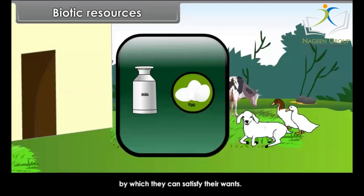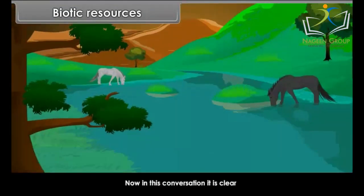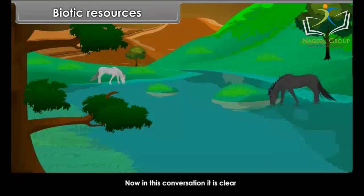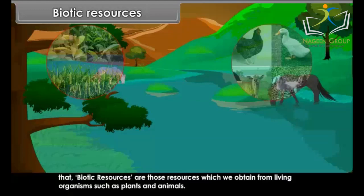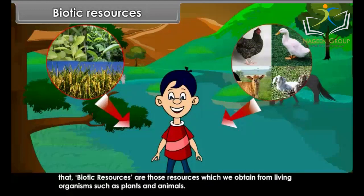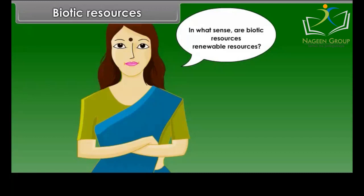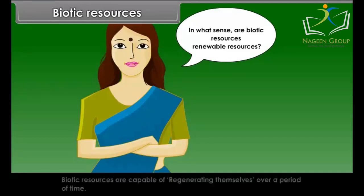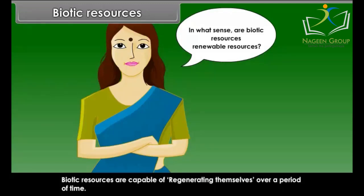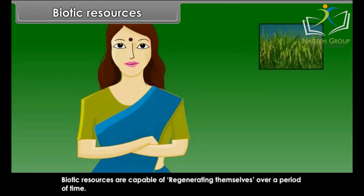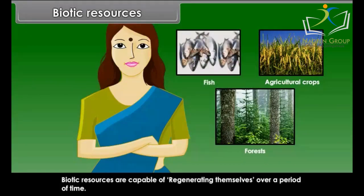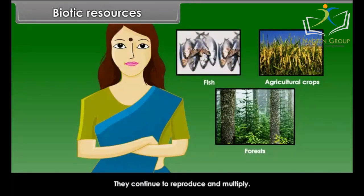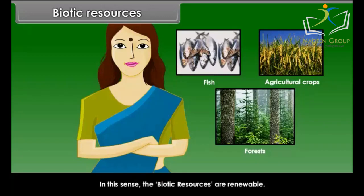From this conversation, it is clear that biotic resources are those resources which we obtain from living organisms, such as plants and animals. Biotic resources are capable of regenerating themselves over a period of time. For example, agricultural crops continue to reproduce and multiply. In this sense, biotic resources are renewable.